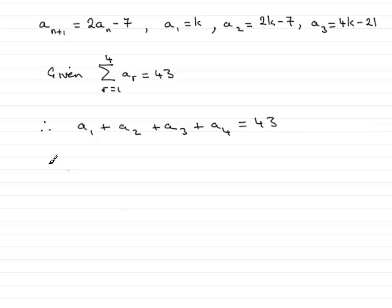Now we know what the first term is, that was k. We know what the second term was, that was 2k minus 7, so put 2k minus 7 in there. Third term, 4k minus 21, so put 4k minus 21.